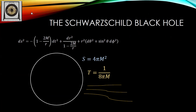If this black hole absorbs a small amount of mass — say, it catches a passing comet — it grows a little but its temperature decreases. Now cooler than the CMB, it absorbs radiation from the CMB at a higher rate than it emits, and enters an endless process of growth. Therefore a Schwarzschild black hole cannot be in stable thermodynamic equilibrium.